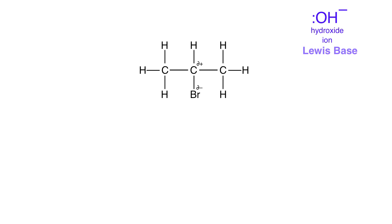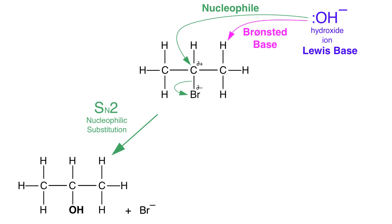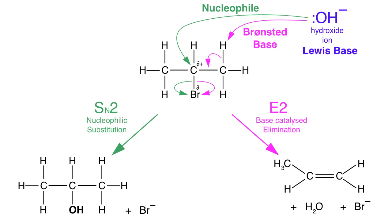So, the hydroxide ion is a Lewis base, and this analysis helps us understand what is going on. The hydroxide ion Lewis base can behave as a nucleophile and it can behave as a Brønsted base — a proton-abstracting base. So, the hydroxide ion with the alkyl halide can initiate SN2 nucleophilic substitution, or it can initiate E2 base-catalyzed elimination.